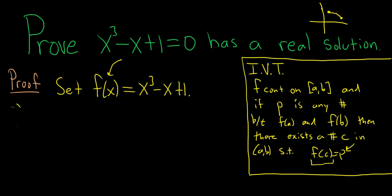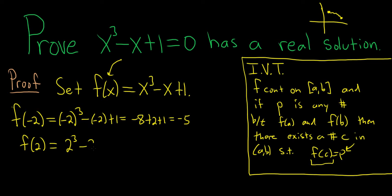So, for example, f of negative 2 will be negative 2 cubed minus negative 2 plus 1. That's negative 8 plus 2 plus 1, so that's negative 5. And f of 2 is equal to 2 cubed minus 2 plus 1, and that's equal to 8 minus 1, which is equal to 7.